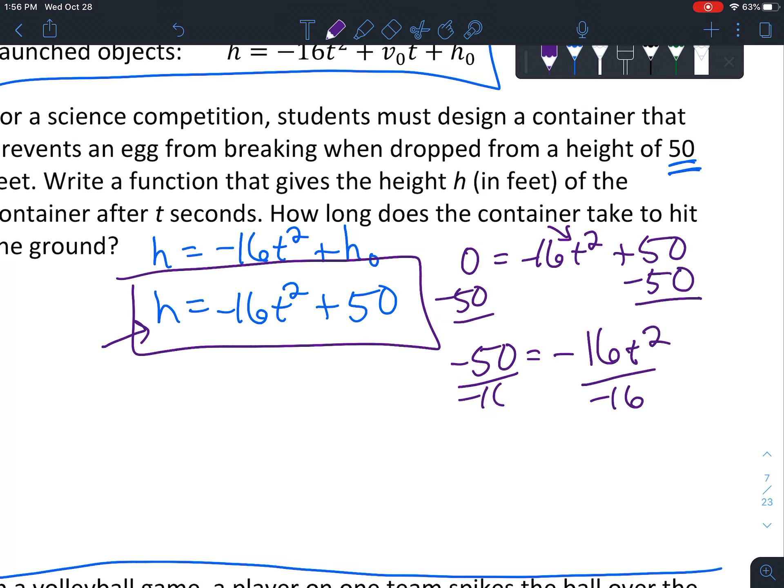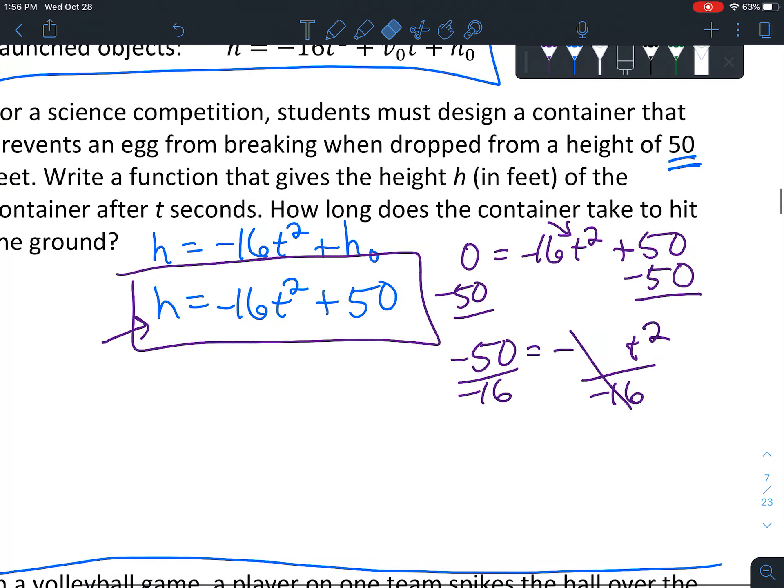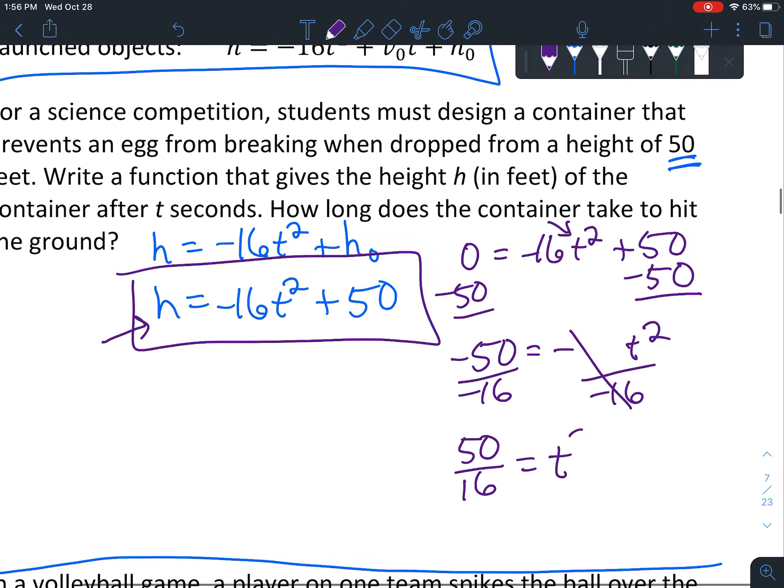Okay. Now divide both sides by negative 16. I'm probably just going to leave it as a fraction for now. But notice that if you have a negative divided by negative, it is positive. So we can write it 50 divided by 16 equals t squared.